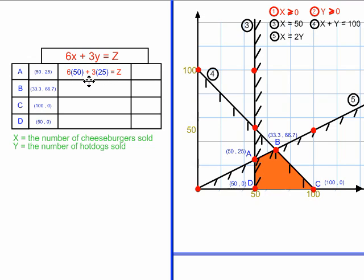6 times 50 is 300, and 3 times 25 is 75. 300 plus 75 is $375. I keep doing that until I've done all four of my vertices.